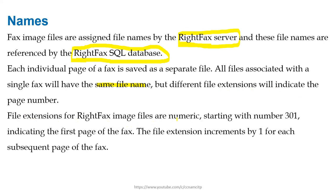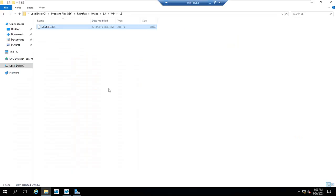The file extension for RightFax image files is numeric, starting with 301, indicating the first page of the fax. The file extension increases by one for each subsequent page. Let me show you — here you can see 'sample.301' — so these are the files, and it is giving you the name 'sample.301'.